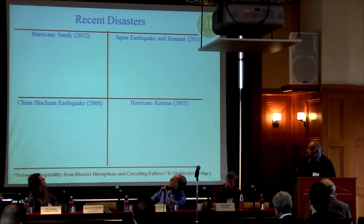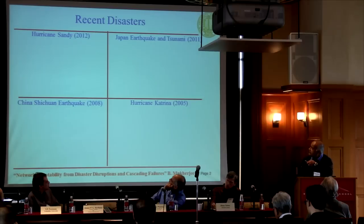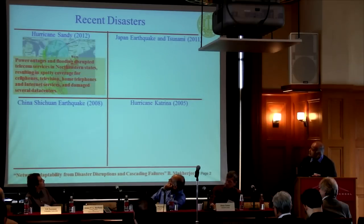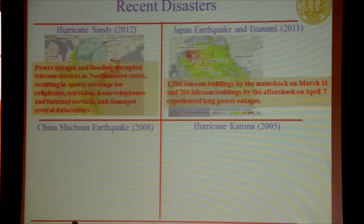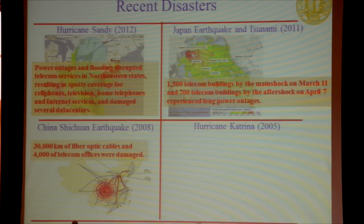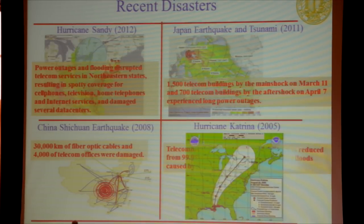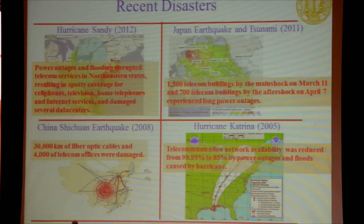We know about many recent disasters. There were power outages and flooding that disrupted telecom services for Hurricane Sandy. The Japan earthquake and tsunami affected about 1,500 telecom buildings from the main shock, and then an aftershock affected another 700 telecom buildings. The Sichuan earthquake in China damaged 30,000 kilometers of fiber optic cable and 4,000 telecom central offices.